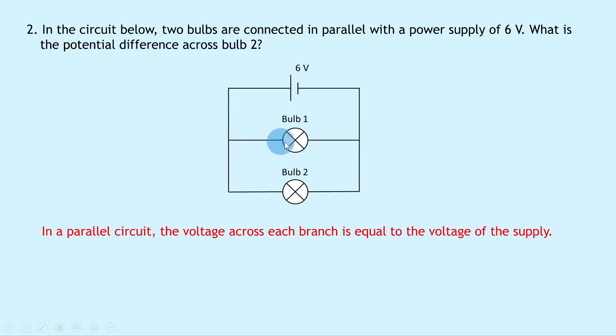So the voltage across this branch must equal the voltage across this branch which must equal the voltage across the supply of 6 volts. You could write this in symbol form as VP = V1 = V2 = ... So that means V2 is equal to 6 volts.